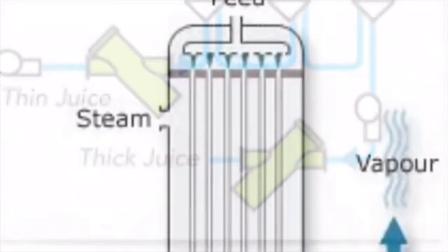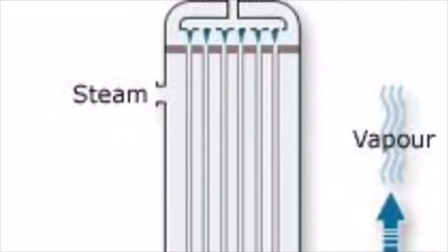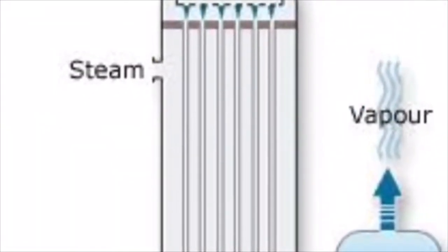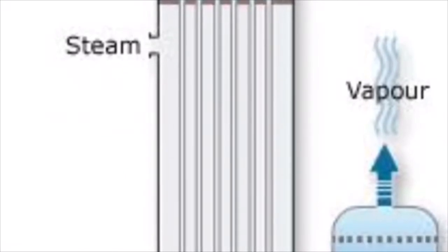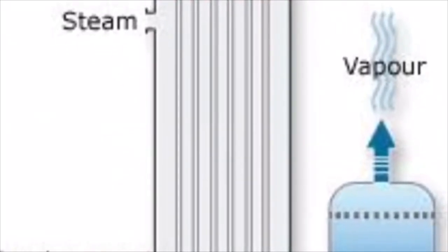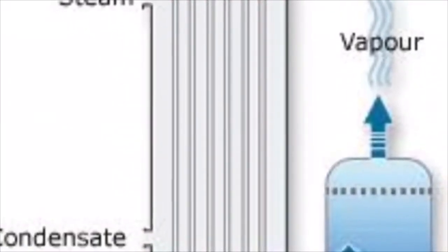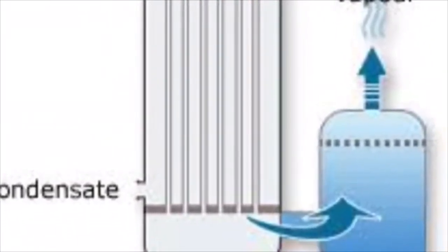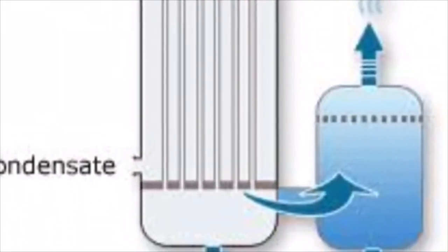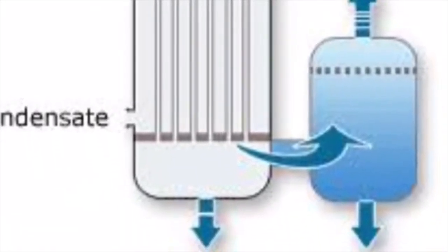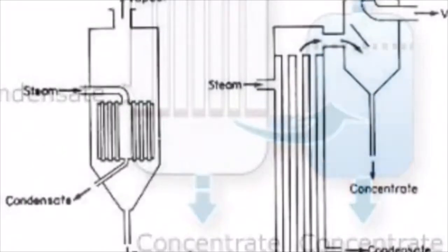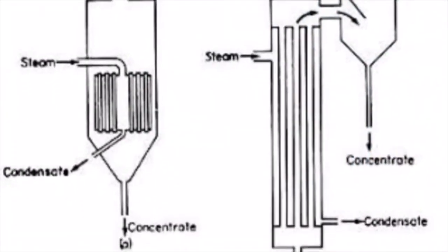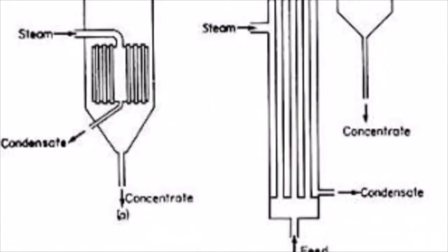The evaporator as a machine generally consists of four sections. The heating section contains a heating medium, which can vary. Steam is fed into these sections. The most common medium consists of parallel tubes, which also have plates or coils.